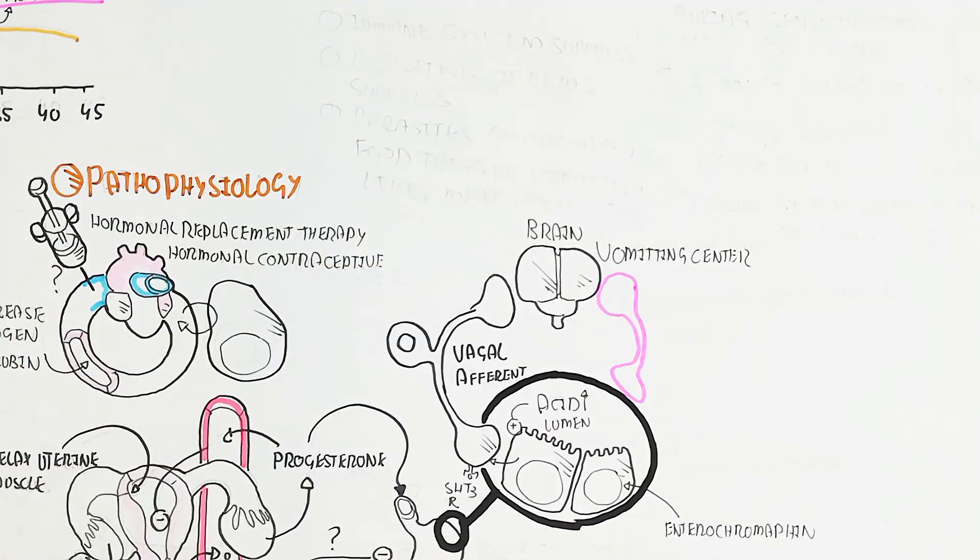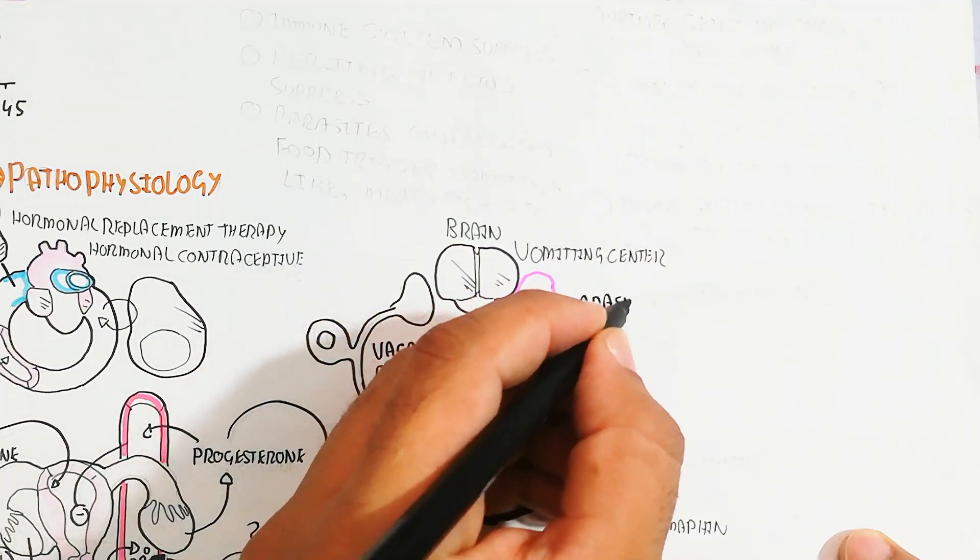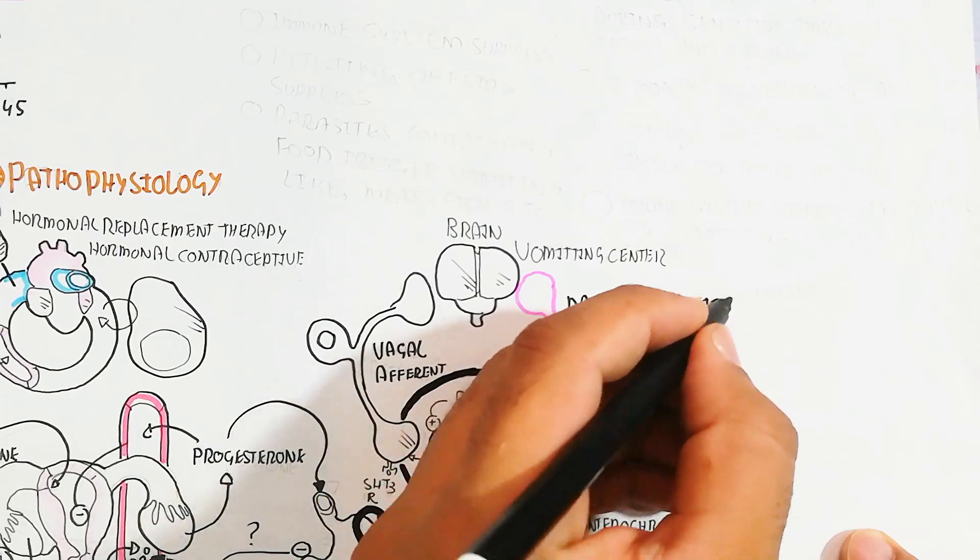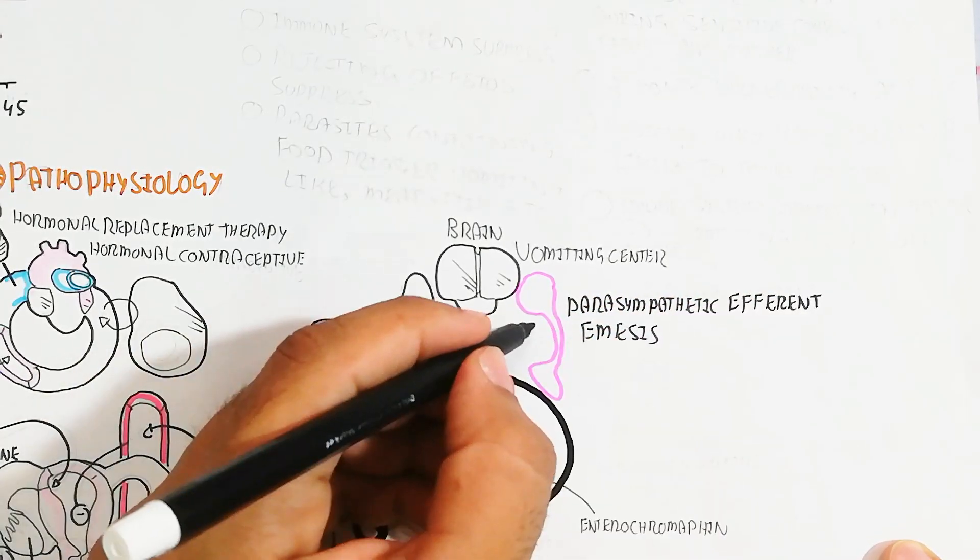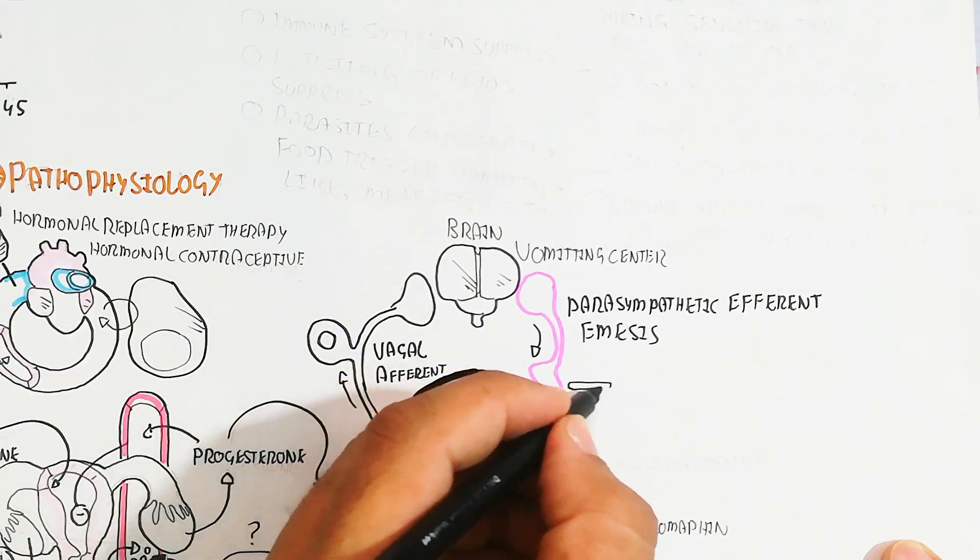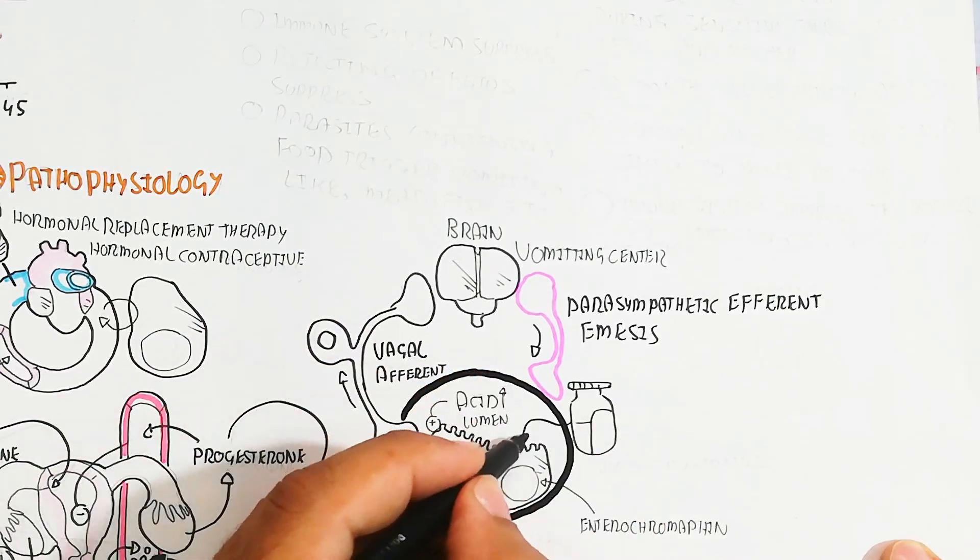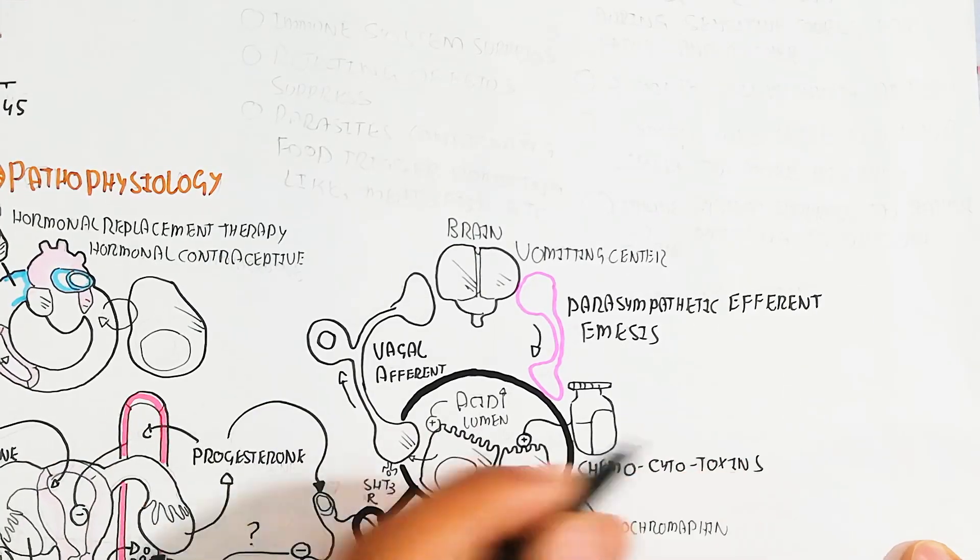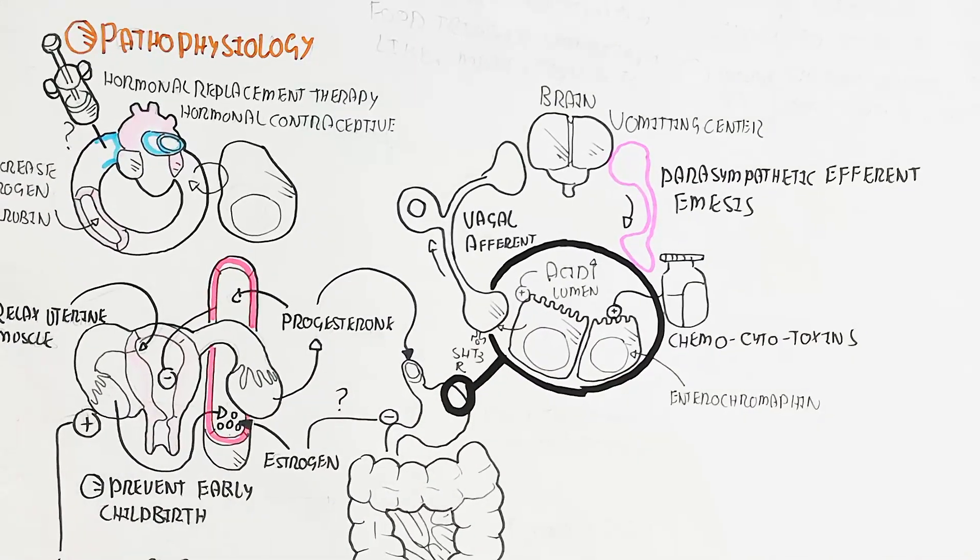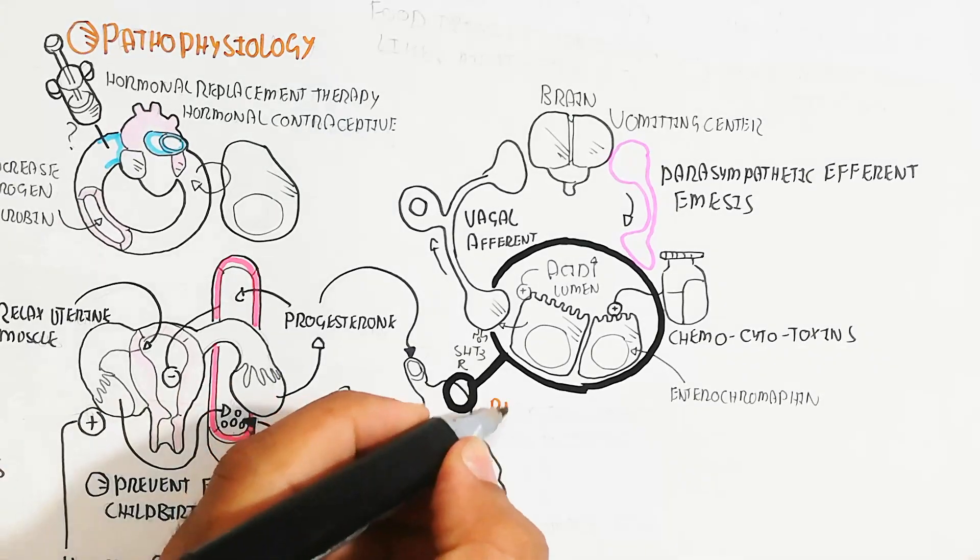The neurotransmitters bind with the 5-HT3 receptor of the vagal afferent nerve, targeting the vomiting center in the brain, leading to parasympathetic efferent nerve triggering emesis. This emesis also occurs through chemocytotoxins during chemotherapeutic agent use.